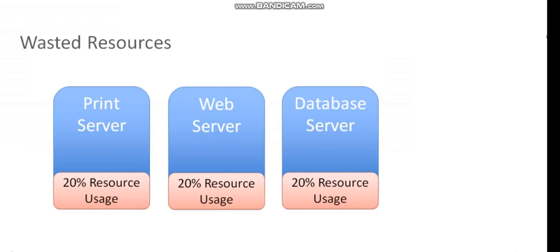The other big benefit is efficiency. Here we see a few different servers on physical systems in our environment. Maybe we have a print server that's using like 20% of its CPU and 20% of its memory, a web server, and a database server. These are physical servers that really aren't using all of their resources. If you're only using 20%, you're wasting 80%.